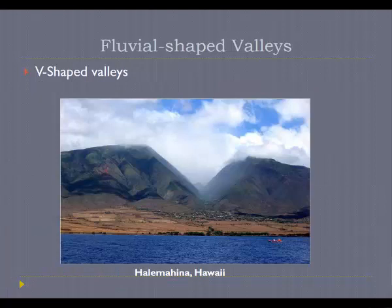Another important thing about rivers is that over time, as they carve out sediments, they tend to create classic V-shaped valleys. Here's an example of a river in Hawaii where erosion has cut down and created a big valley — just like the Grand Canyon or the Feather River Canyon. From this perspective you can see the shape of the valley is a classic V, which is different from the landscape features created when glaciers are involved.